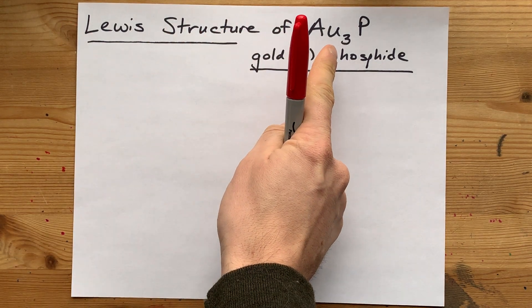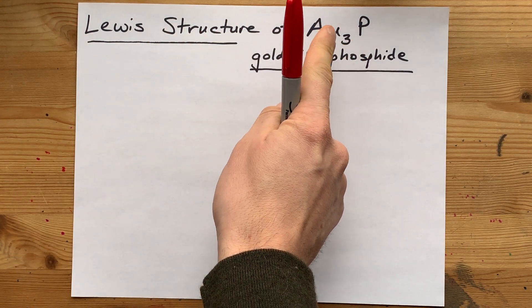We're going to draw the Lewis structure for gold-1-phosphide, or Au3P.